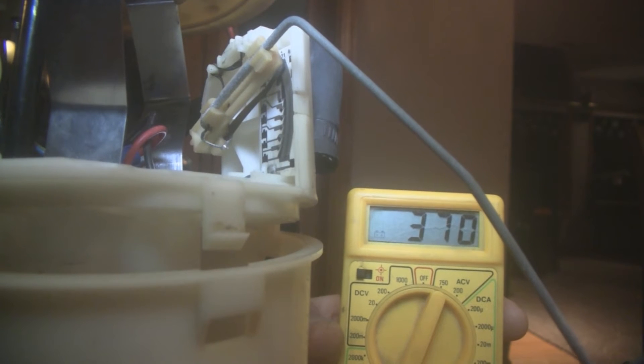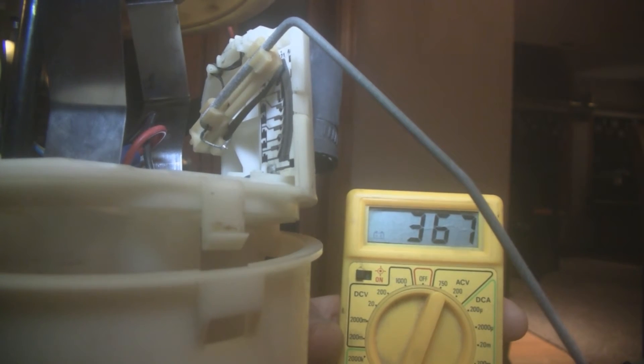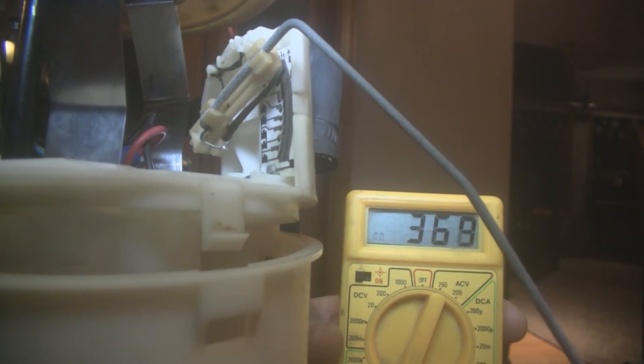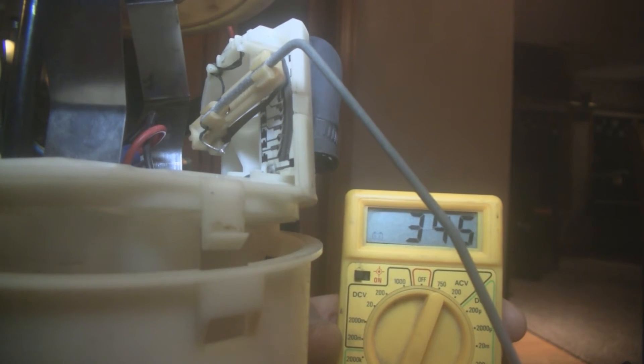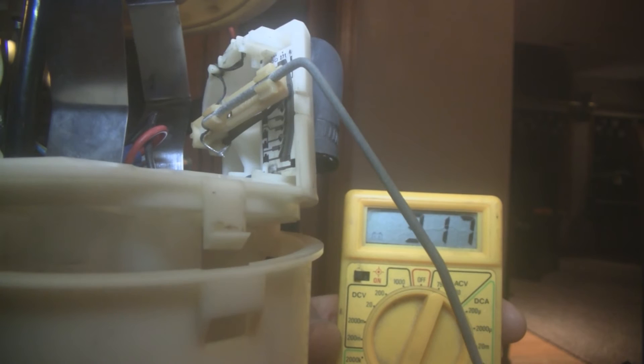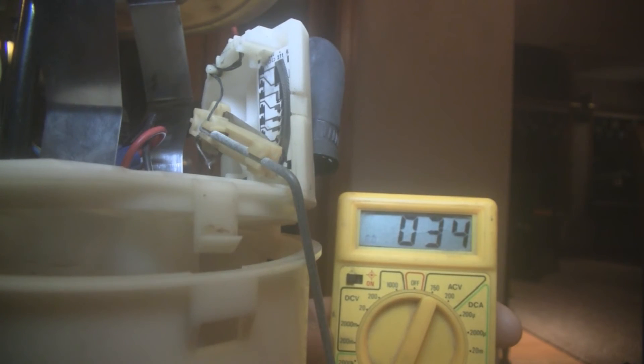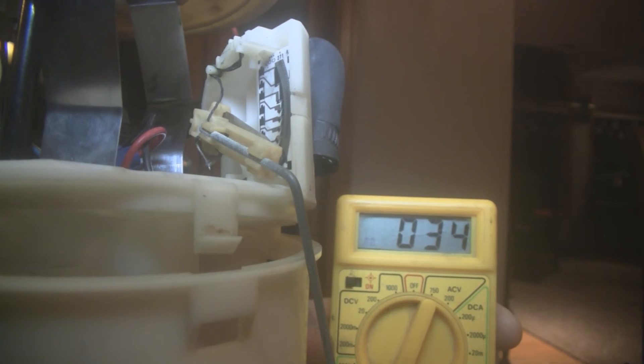It goes down about 3 to 4 ohms per segment as I gently lower it and moves down very smoothly. This particular car is reading fuel fine, but if you're having trouble with your gauge, you could probably test these wires while the fuel pump is still in the car.